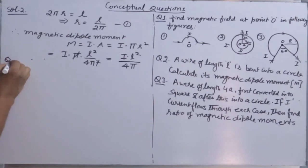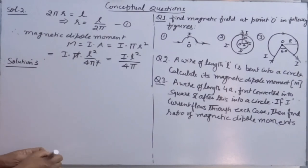Question number 3. Let's see what is there. A wire of length 4A is converted into a square and after this into a circuit.